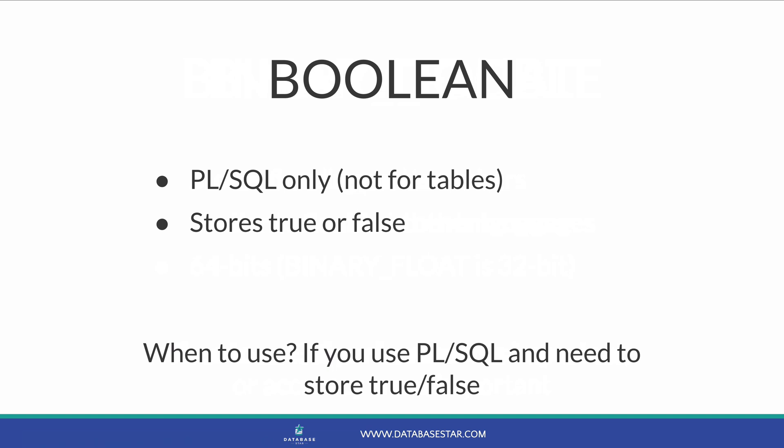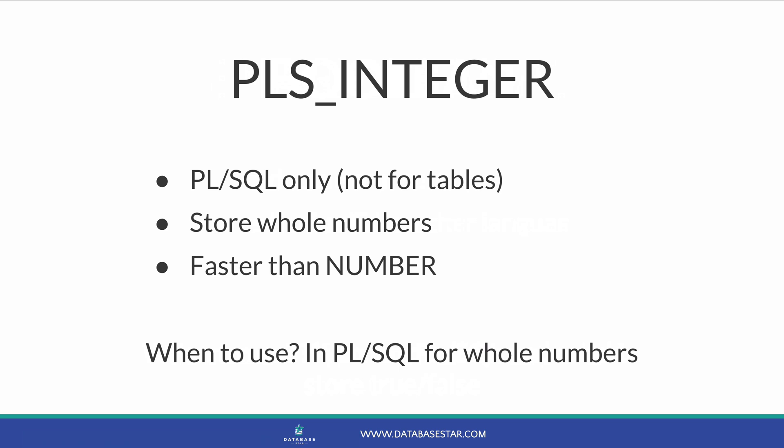Oracle SQL has a BOOLEAN data type to store true or false values, but this is only available in PL/SQL — you can't store a boolean in a table in Oracle. If you want to store boolean in a table, I recommend a NUMBER with one digit. The PLS_INTEGER data type is also only available in PL/SQL. It's an integer value that works similarly to NUMBER but performs better in PL/SQL and can only store whole numbers. If you're using PL/SQL and need to store whole numbers, use PLS_INTEGER instead of NUMBER — it takes up less storage and performs better.